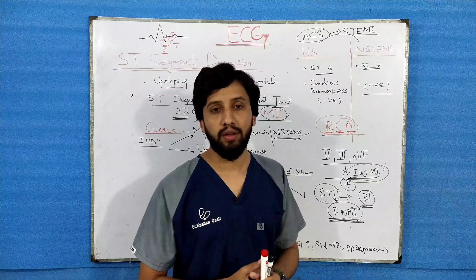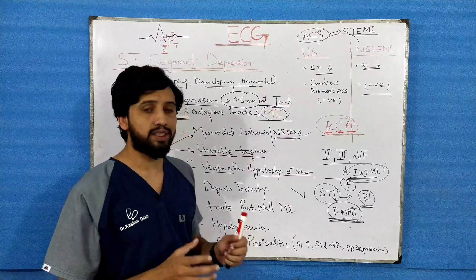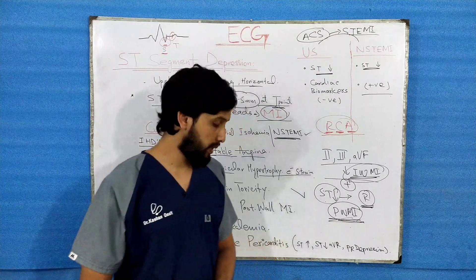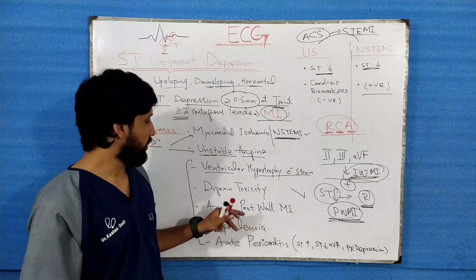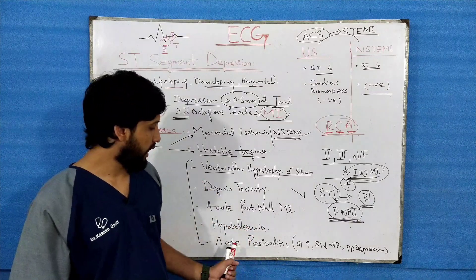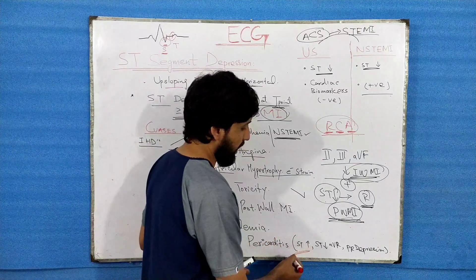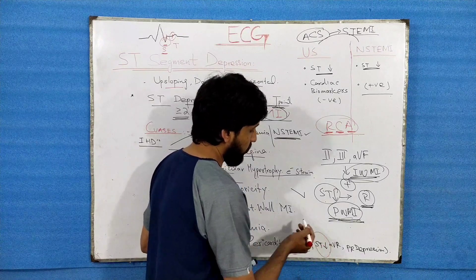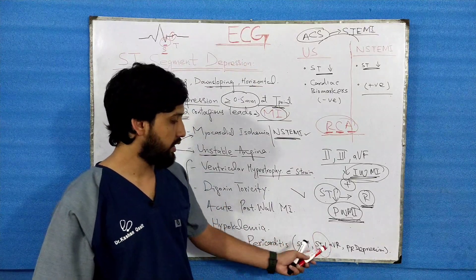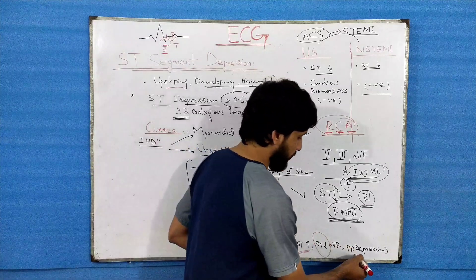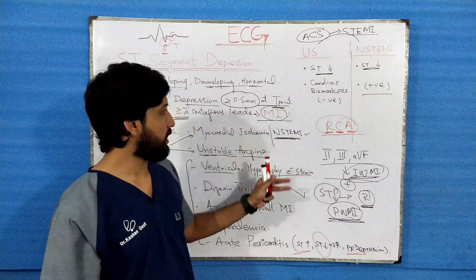The next cause is hypokalemia, which also causes ST segment depression. Finally, in acute pericarditis, you will notice ST segment elevation on the ECG, but the lead AVR will show ST segment depression. Additionally, PR depression is also noticed in acute pericarditis.